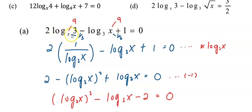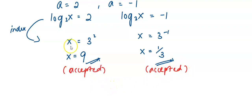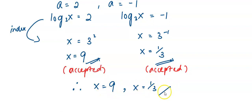Use your calculator: press log 3 over log (1 over 3) to get log base (1/3) of 3, and press log (1 over 3) over log 3 to get log base 3 of (1/3). Combine them following the operations given and check whether the left-hand side equals 0. After checking, both solutions are accepted because both satisfy the equation. So our final answers are x equals 9 and x equals 1 over 3.